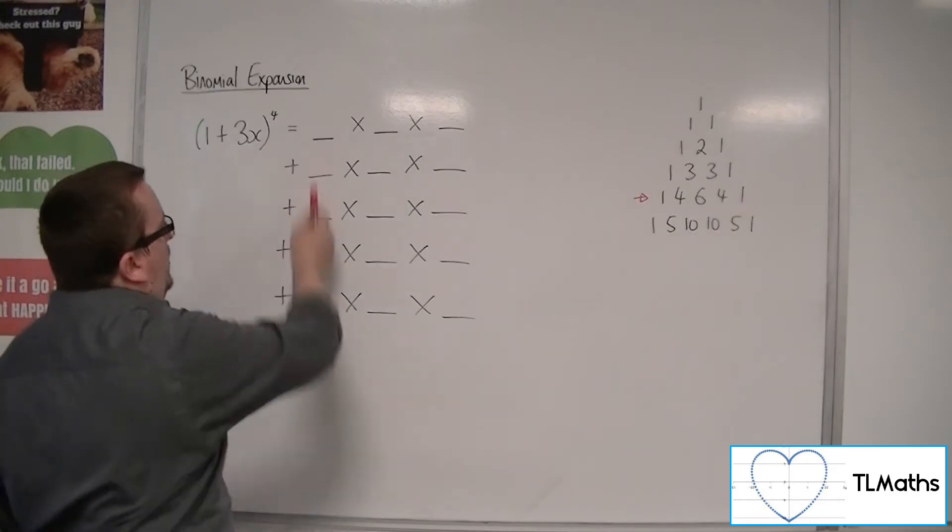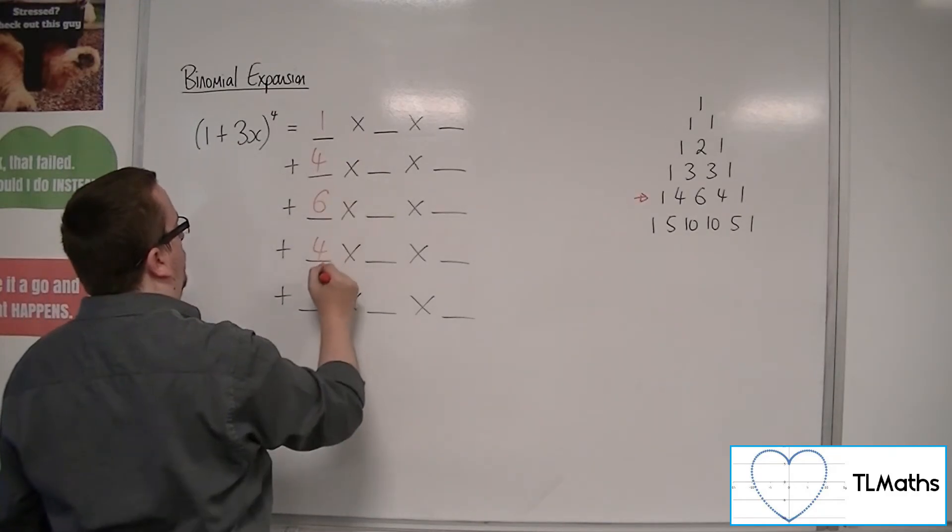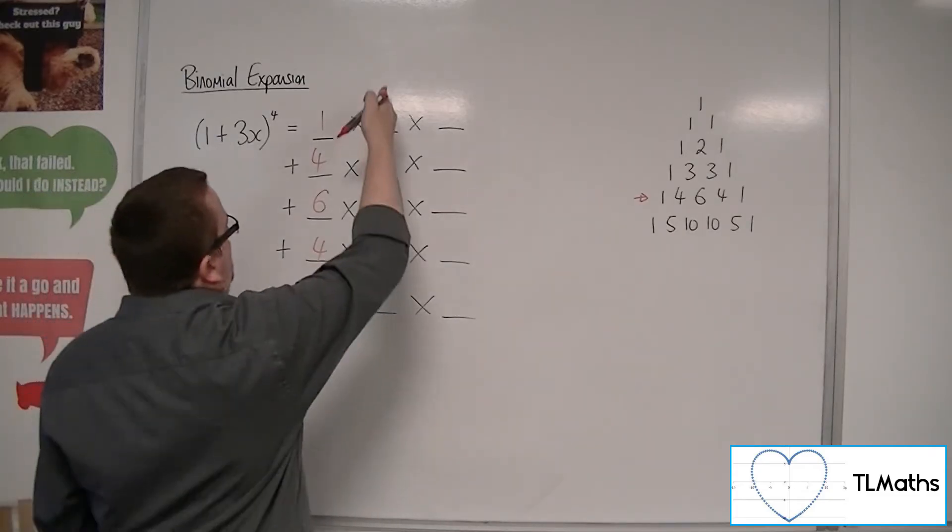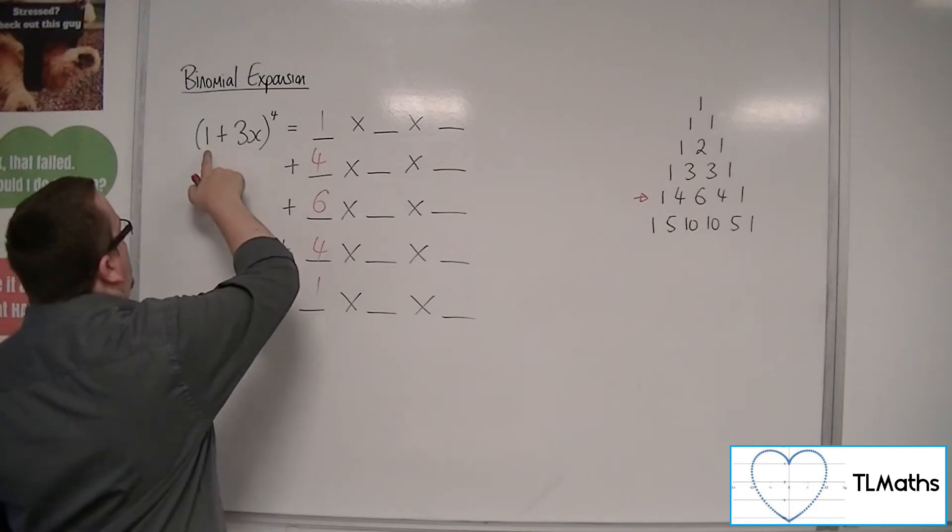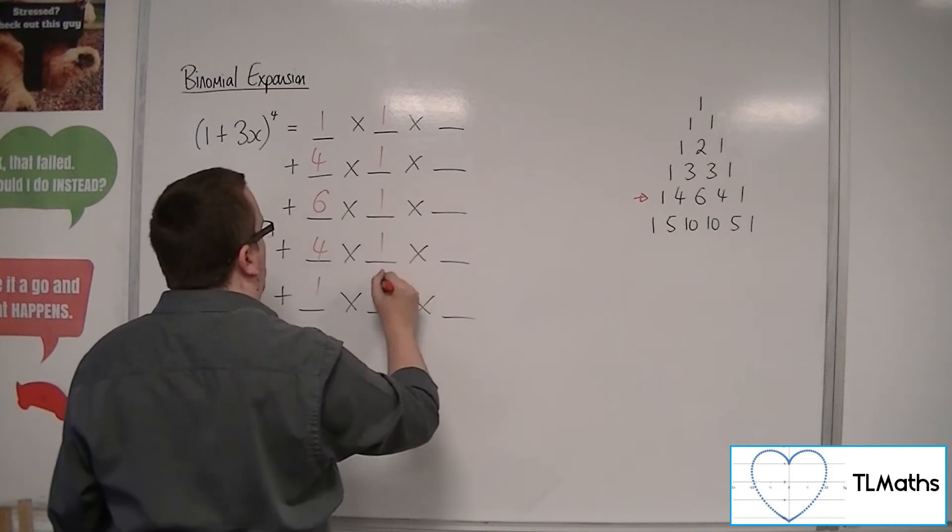So this first element is Pascal's triangle: 1, 4, 6, 4, 1. Now, the middle is going to be representing A. Now, A is 1. So we've got 1, 1, 1, 1, 1.